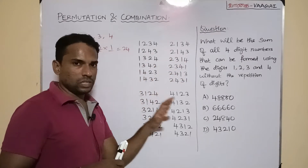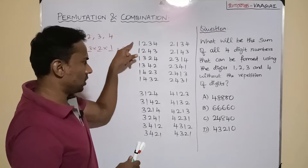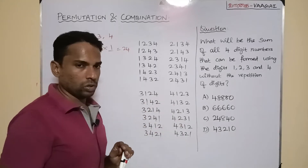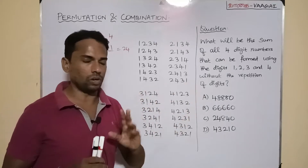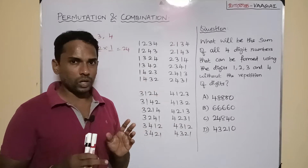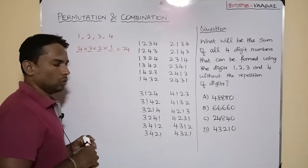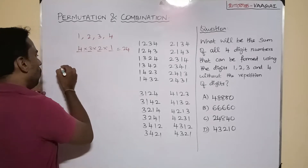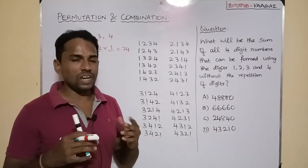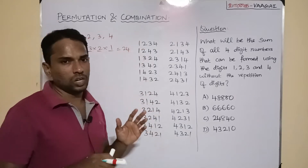If you notice, I have grouped these 24 numbers into 4 groups of 6. The first 6 numbers start with 1, the next 6 start with 2, the next 6 start with 3, and the last 6 start with 4. I have successfully assembled all 24 numbers. Our task is to find their sum, and I am not going to add them one by one — instead I will use a small trick. I listed these numbers only to explain clearly; you can do this process directly without listing them.